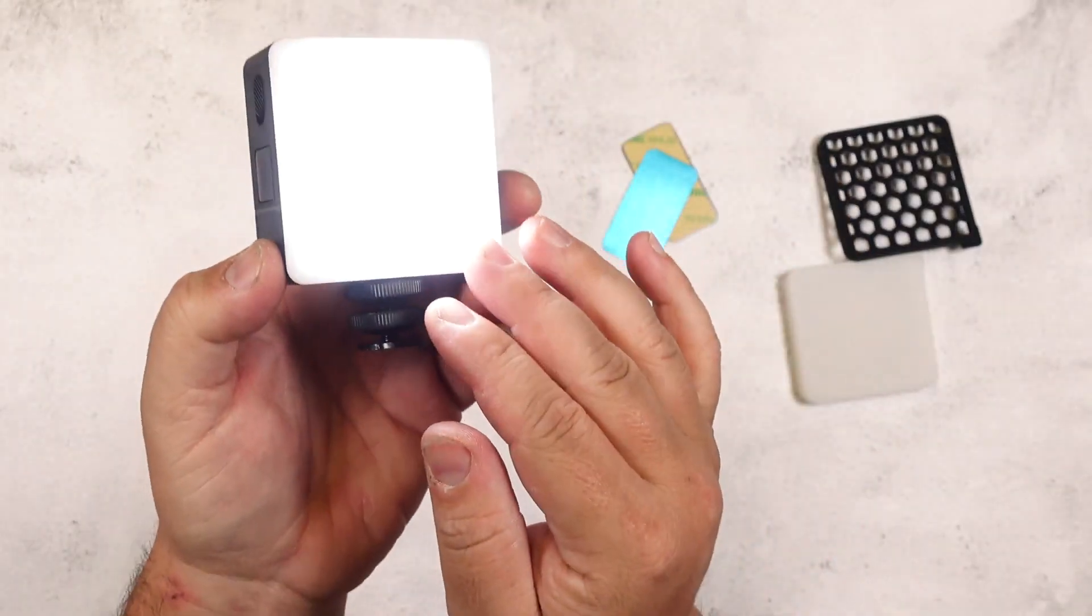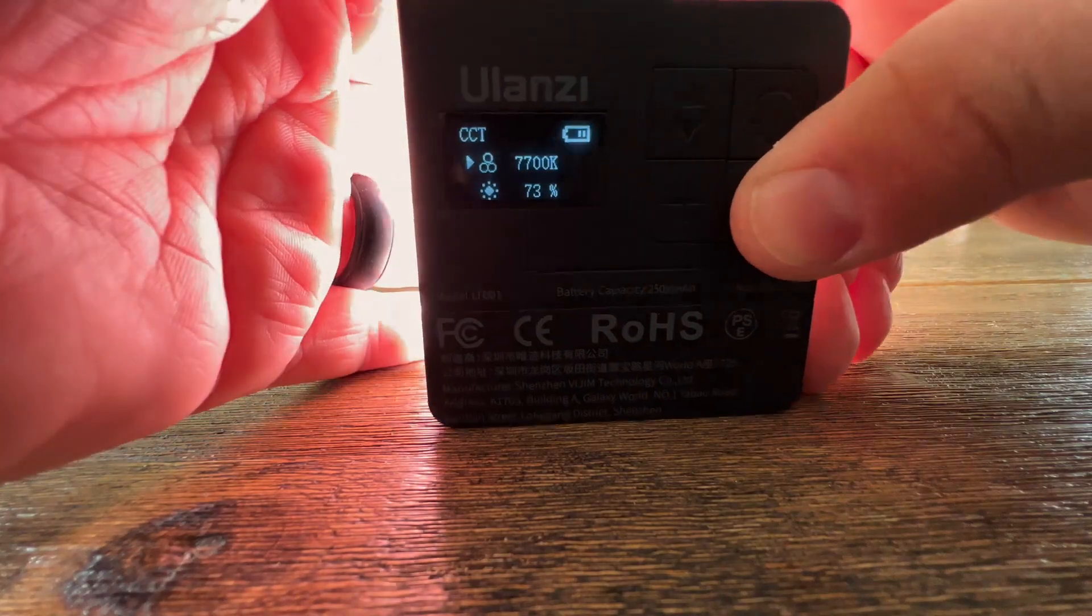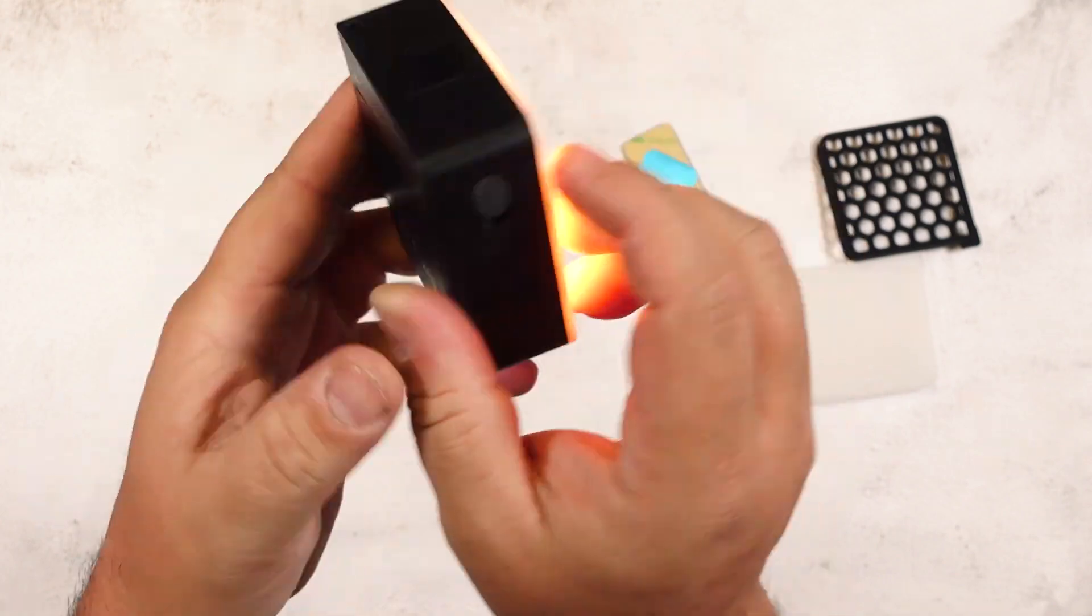Starting with the regular CCT light you can get a brightness of 800 lux and adjust the color temperature from 2500 to 9000 making it warmer or colder.